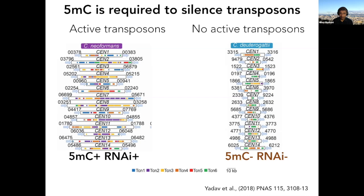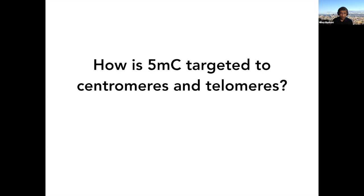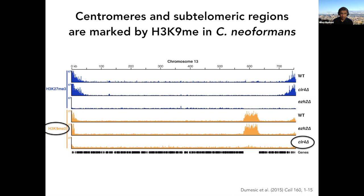The first part of the seminar: how is 5-methylcytosine targeted to centromeres and telomeres? A clue comes from our prior studies examining H3K27 trimethylation and H3K9 methylation by ChIP-seq. H3K9 methylation is focused on the middle of each chromosome — the centromere. It doesn't require PRC2, but if you get rid of the SUVAR39 homologue (which we call CLRC4), you lose H3K9 methylation. Importantly, H3K9 methylation is at centromeres and subtelomeric regions exactly where you see DNA methylation.